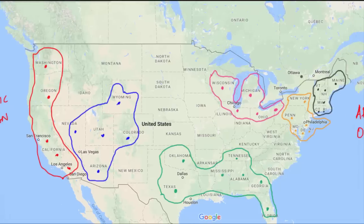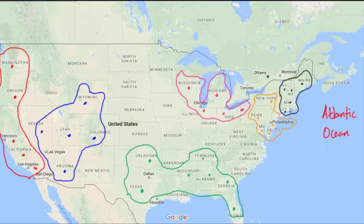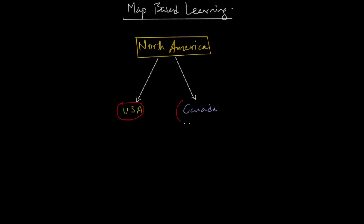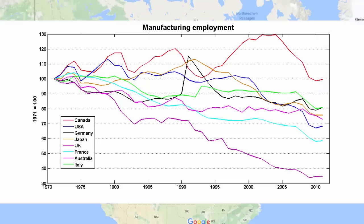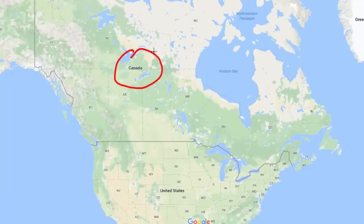So those were all the industrial regions in USA. Now we'll head over to Canada, which is the second country in North America. Canada is the second biggest industrial country in North America, and manufacturing is highly developed here. The country has a huge amount of iron ore, petroleum, and forest resources.